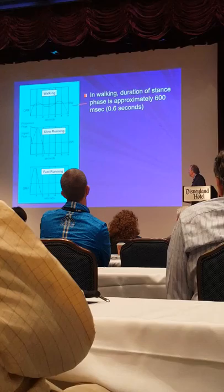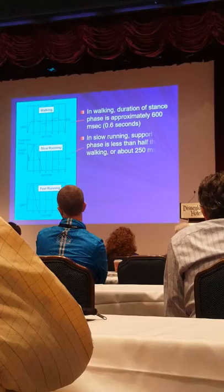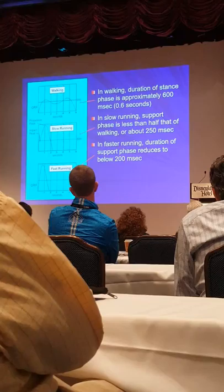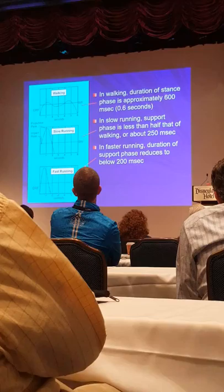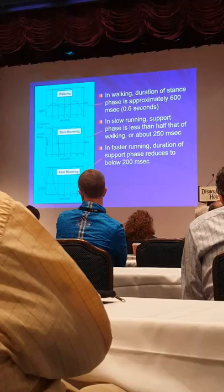Regarding stance phase duration: typical walking is about 600 milliseconds depending on speed. Slower running is about 250 milliseconds or a quarter of a second. Faster running is around 200 milliseconds, and we can go down to almost 150 milliseconds in the greatest sprinters. As we go faster, less time on the ground and more time in the air. As we go slower, more time on the ground and less time in the air.